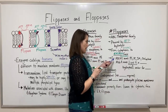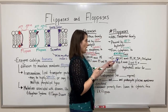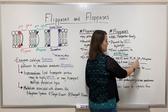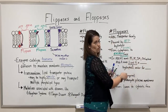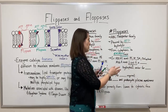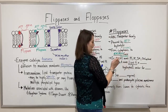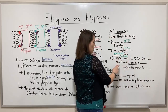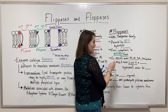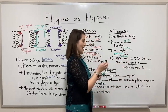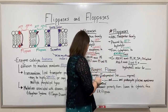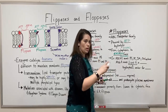Here are some flopase examples. ABCA1 is a flopase that moves phosphatidylserine, phosphatidylcholine, sphingomyelin, and cholesterol — acting on multiple types, moving them from the inside to the outside face. Another interesting example is MSBA, which moves lipid A from the inside to the outside, specifically in E. coli.